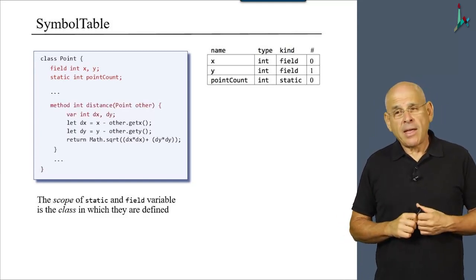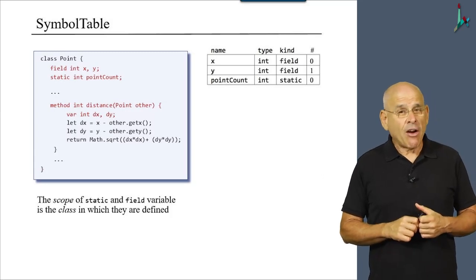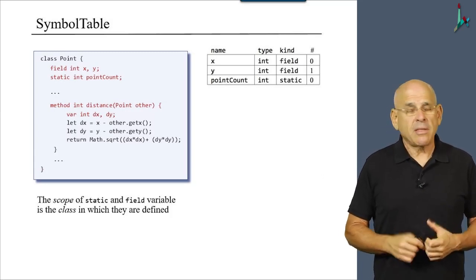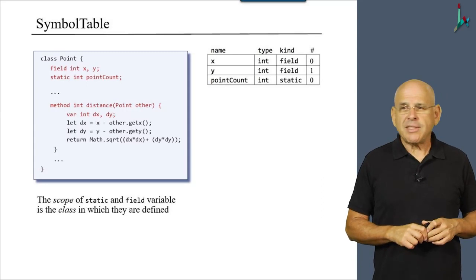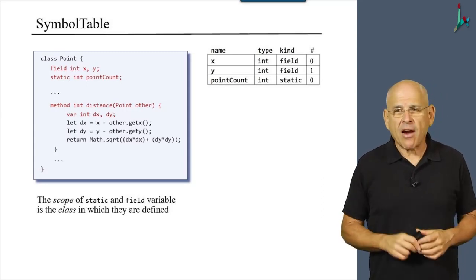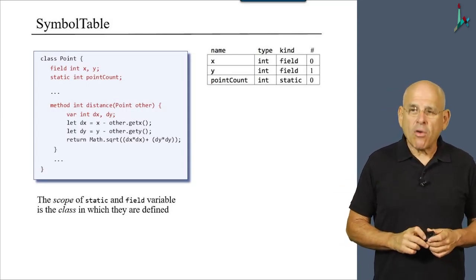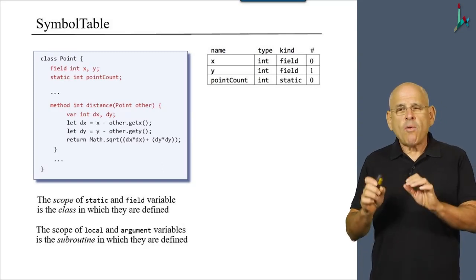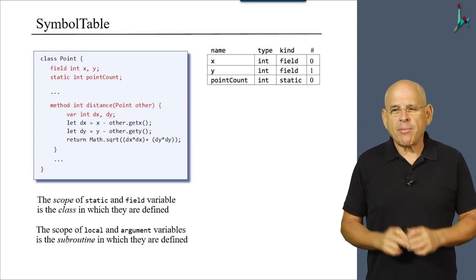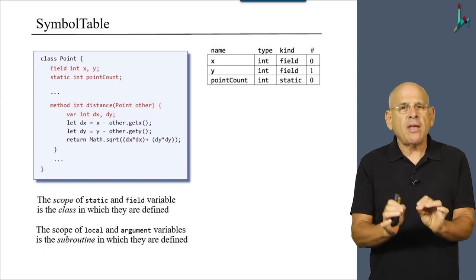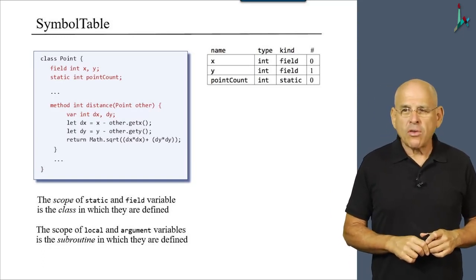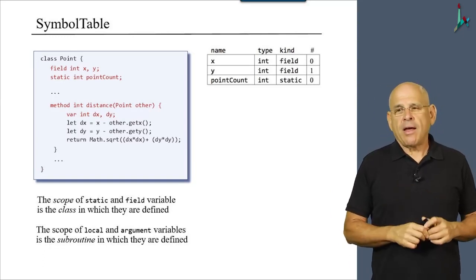Now, another kinds of variables that we may have are arguments and local variables. That's what we see in this example here. Other is an argument, dx and dy are local variables. And the scope of arguments and local variables is the subroutine code in which they are being declared.